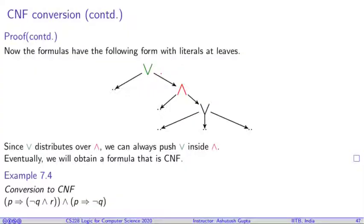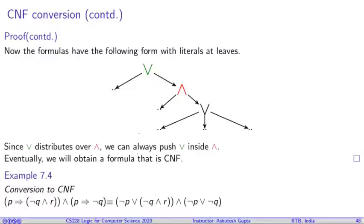Let's look at an example. For this formula, we need to get rid of this implication sign first. If we do that, we get this form. Once we have this formula, notice this disjunction is sitting on top of this conjunction. We need to switch the order. So we distribute. And after distribution, we obtain this formula, transformed into these two clauses. We have a formula in CNF form.